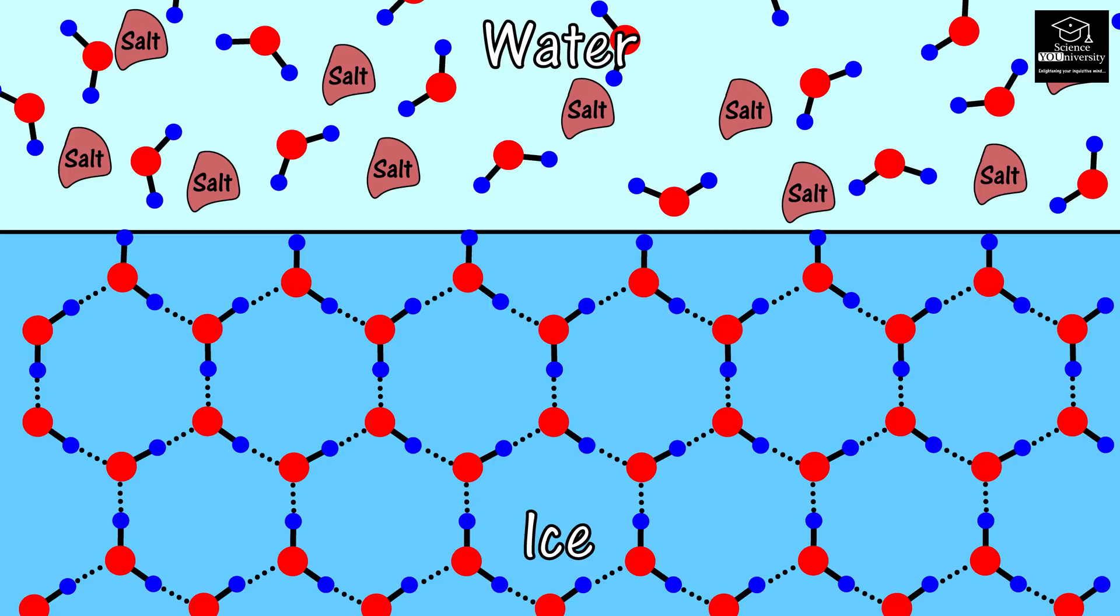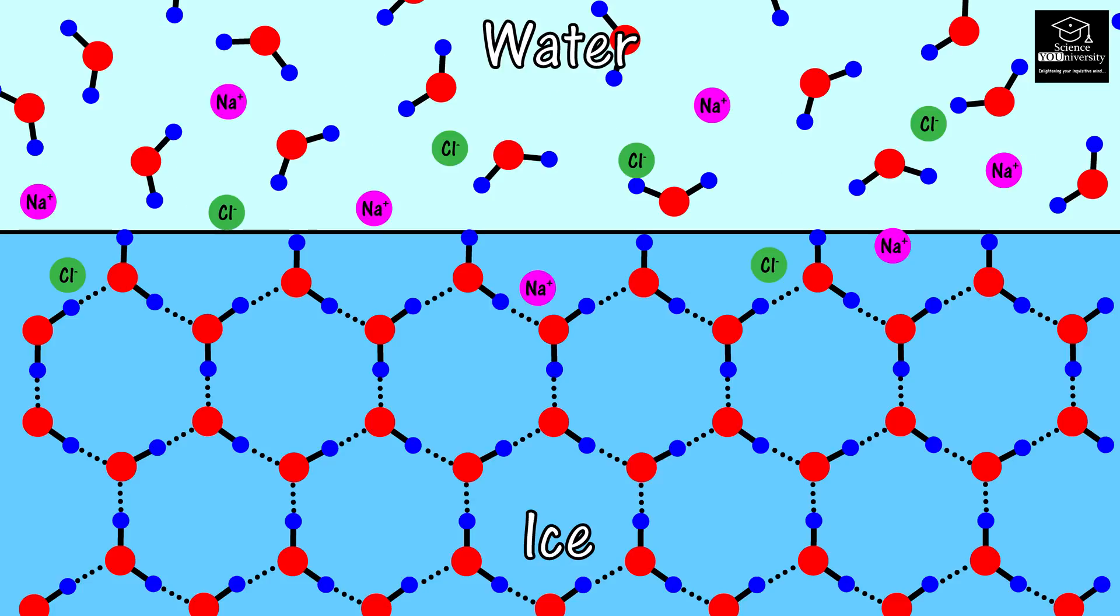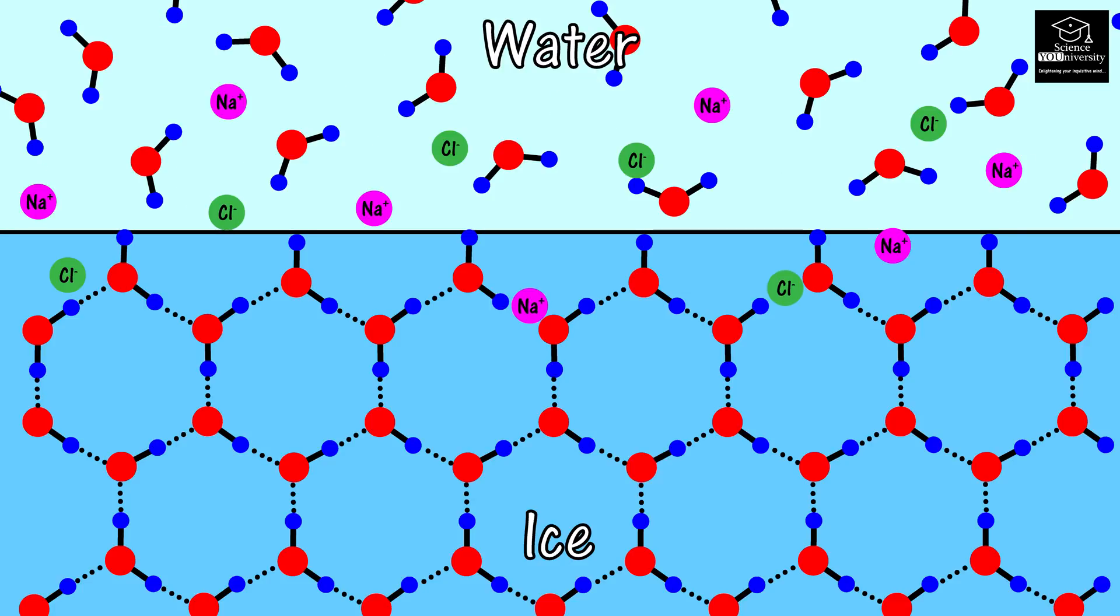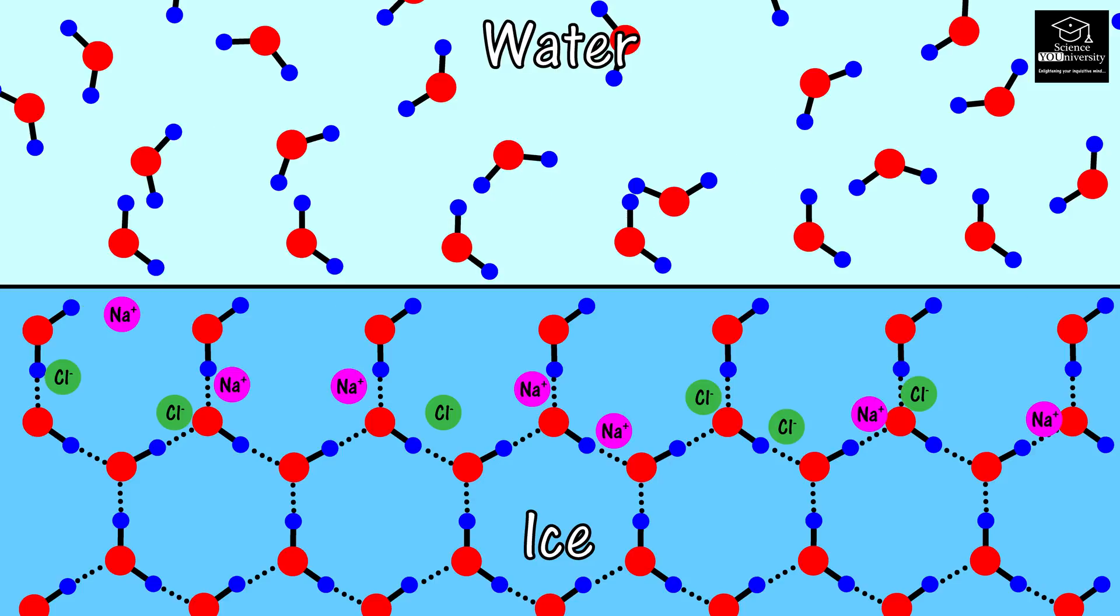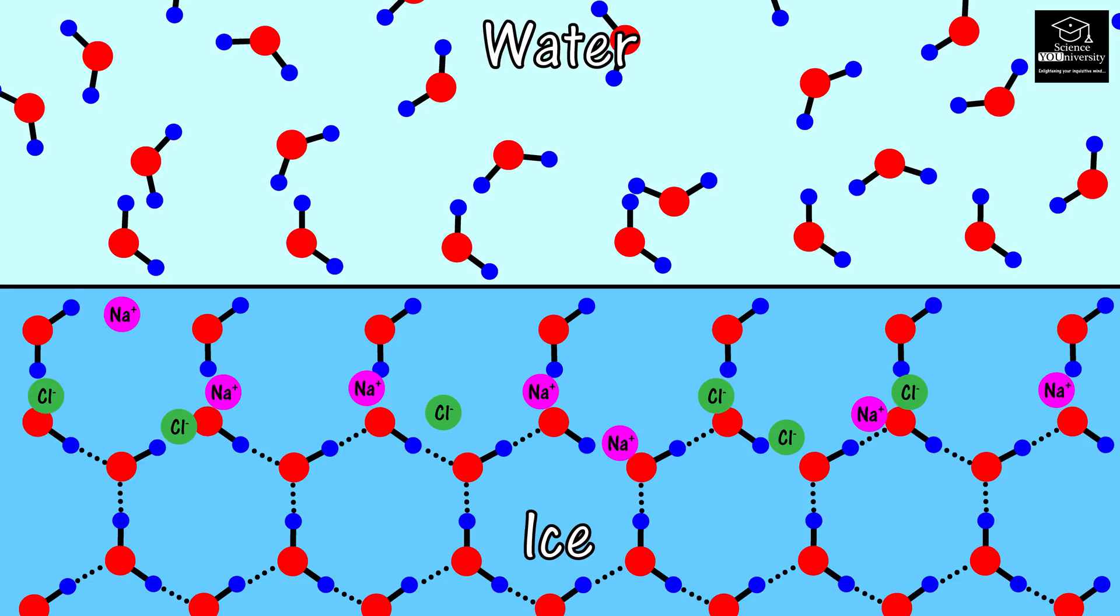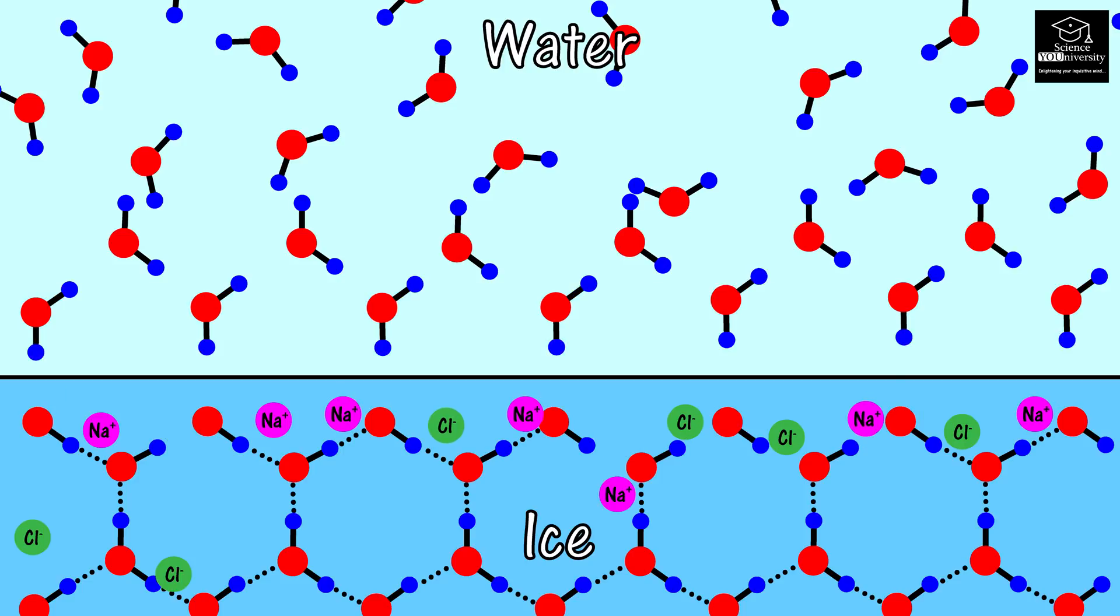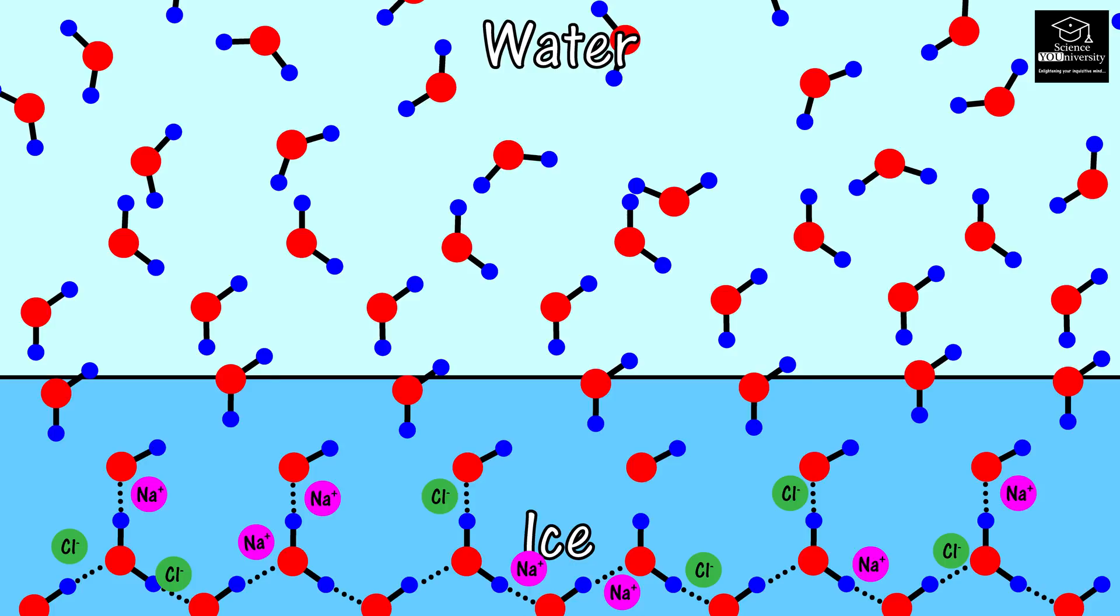Let's see how salt melts ice. When salt is dissolved in water, it generates sodium and chloride ions. These ions disrupt the formation of the ordered structure of water molecules, or ice. As a result of this, the amount of water molecules that freeze will be lower than the amount of water molecules that melt.